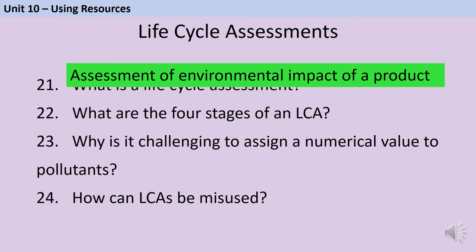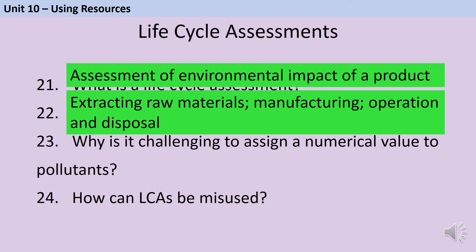A life cycle assessment (LCA) is an assessment of the environmental impact of a product. There are four stages: extraction of raw materials, manufacturing of the product, operation and use throughout its lifetime, and finally disposal. At each stage, we look at what materials and energy are being used, and what pollution is being produced. It's very hard to assign a financial numerical value to pollutants — for example, with a computer, a lot of the associated pollution comes from the electricity used to run it, but you don't know how that electricity was generated.